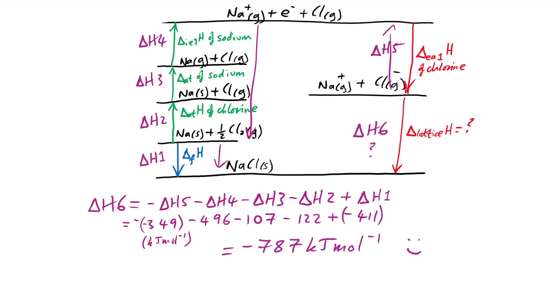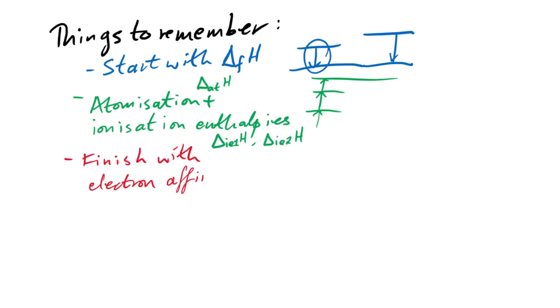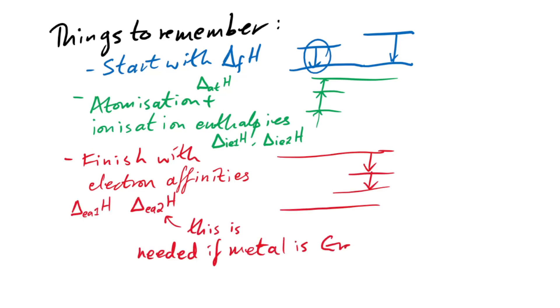Now this is just NaCl, but if this was, for example, Na2O, sodium oxide, then we'd need to double all of the values for Na because we have two moles being used of sodium to make one mole of sodium oxide. A couple of things to remember. It's always good to start with your enthalpy change of formation. And we go up from there with our enthalpy changes of atomisation and ionisation. Be careful, you're going to need the first ionisation energy, but you also might need second ionisation energy if your metal is in group two. Same thing goes for electron affinity if your nonmetal is in group six.